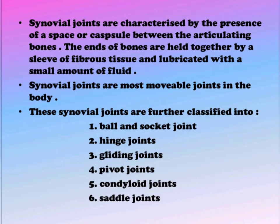Synovial joints are characterized by the presence of a space or capsule between the articulating bones. The ends of bones are held together by a sleeve of fibrous tissue and lubricated with a small amount of fluid. Synovial joints are the most movable joints in the body and are further classified into six types.